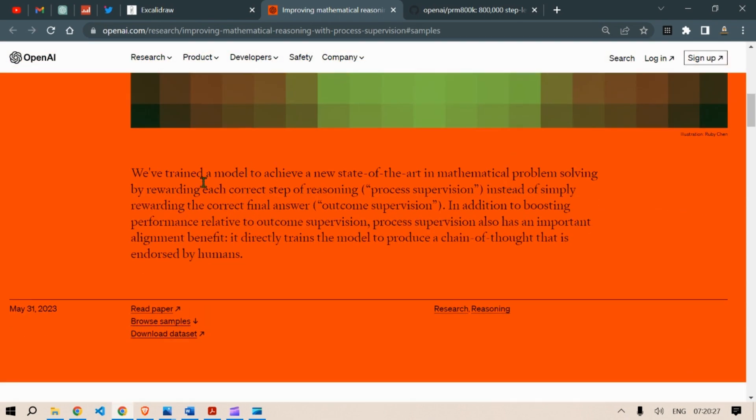Now, they have trained a model to achieve a new state of the art in mathematical problem solving by rewarding each correct step of reasoning, which is process supervision, instead of simply rewarding the final correct answer, which is outcome supervision. In addition to boosting performance relative to outcome supervision, process supervision also has an important alignment benefit, directly trains the model to produce a chain of thoughts that is endorsed by humans.